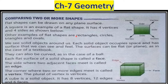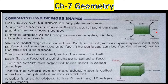First we will start with the flat shape. Flat shapes can be drawn on any plane surface — we can draw them anywhere. This is a square — an example of a flat shape. A square has four vertices, which means four corners, and four sides. Other examples of flat shapes are rectangle, circle, triangle, and oval.